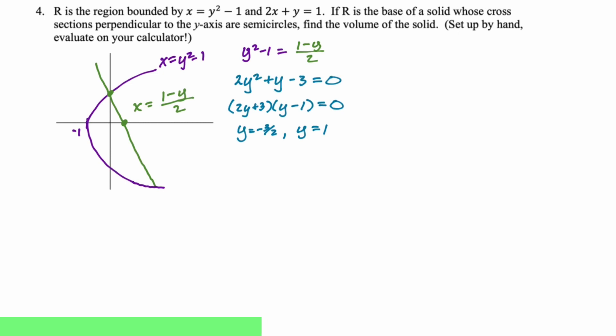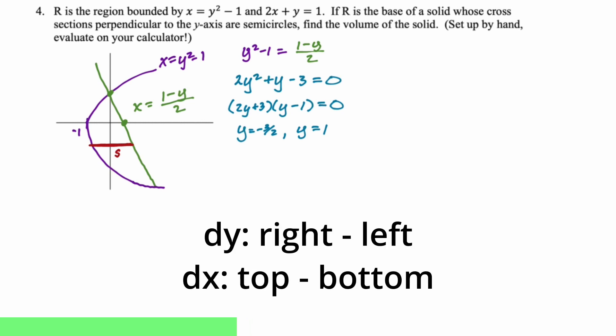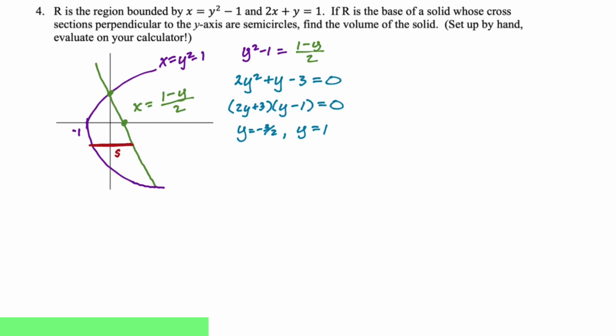All right. So we need to set this up. We're going to calculate s, which in this case is right takeaway left. So when you're doing dy, it's right takeaway left. When you're doing dx, it's top takeaway bottom. These problems are pretty formulaic. Like you don't have to think about them too much. It's always sketch the region, find the intersection points, figure out which one's on top or bottom or to the right or left. And then you just go from there. So in this case, s is going to be right takeaway left. So that's one minus y over two minus the quantity y squared minus one. And then semicircles, it's well worth memorizing. When you're doing volume with cross sections and semicircles, it's going to be pi over eight, the integral of s squared. And then in this case, dy. So we're going from negative three halves to one, s squared dy.